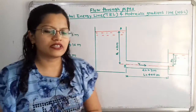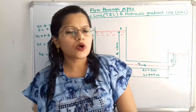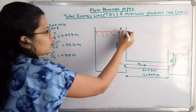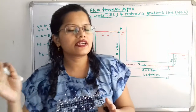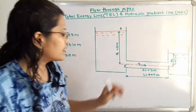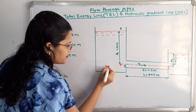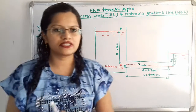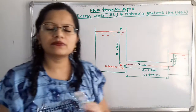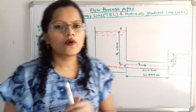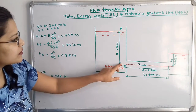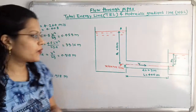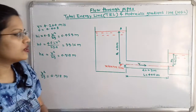All losses are now calculated. We will now plot the total energy line. The total energy at point A, taken at the free surface of water in tank 1, equals pressure head plus kinetic head plus datum head. The reference line passes through the center of the pipe. Pressure head at point A is zero (open to atmosphere), velocity in the tank is negligible so kinetic head is zero, and the datum head is 50 meters. Therefore, total energy at point A is 50 meters.